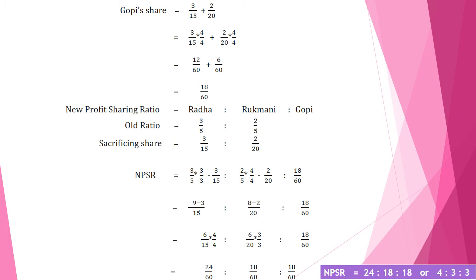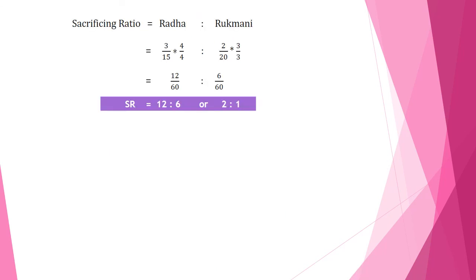Since 6/15 and 6/20 have different denominators, take the LCM (60). Multiply Rada's 6/15 by 4/4 = 24/60, Rukmani's 6/20 by 3/3 = 18/60, and Gopi's 18/60. The new profit sharing ratio is 24:18:18, simplified to 4:3:3. For the sacrificing ratio, Rada sacrificed 3/15 and Rukmani 2/20 — making equivalent: 12/60 and 6/60, giving a sacrificing ratio of 12:6 or 2:1.